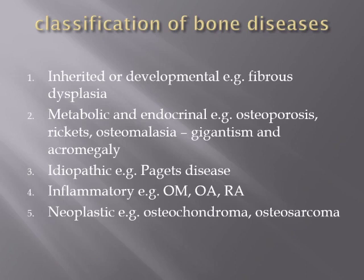For example, lung diseases may be idiopathic, inflammatory, or neoplastic. Diseases of the GIT — colon or stomach — may also be idiopathic or inflammatory. For bone diseases specifically, we add additional categories.